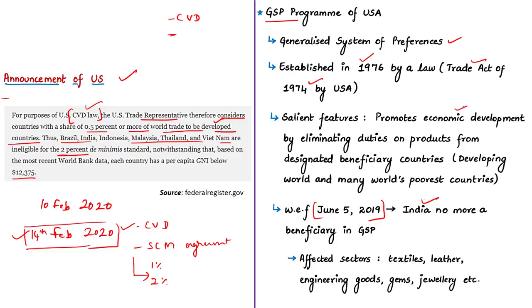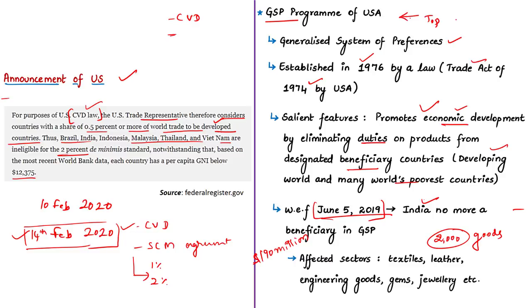GSP promotes economic growth and development in the developing world and the poorest countries. India was a GSP beneficiary until 5th June 2019. Over 2,000 goods exported from India were exempted from import tariffs when India was a beneficiary. Termination as a GSP beneficiary led to a loss of about 190 million US dollars to India in trade. In 2018, the US Trade Representative ranked India as the top beneficiary of the program, with benefits to crucial sectors such as textiles, leather, engineering goods, gems, and jewelry.